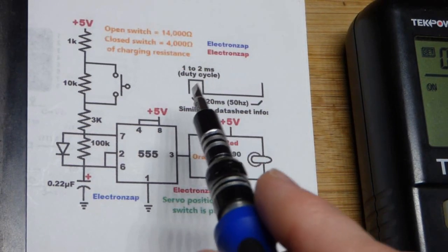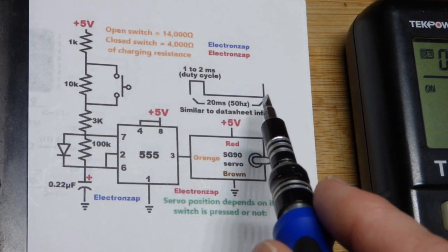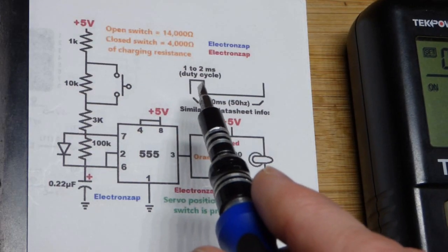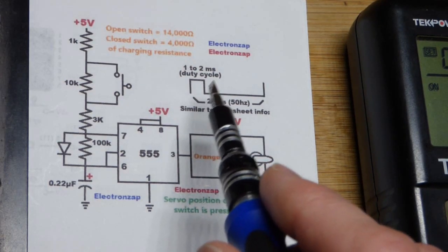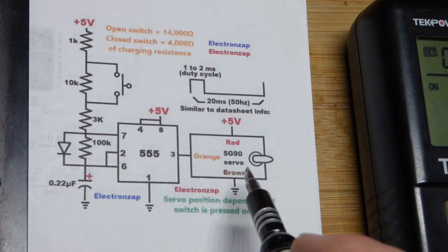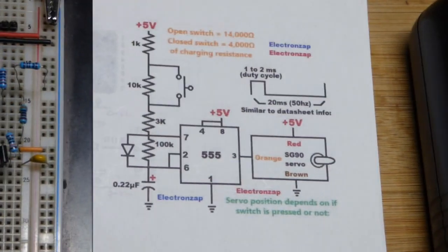There's about 20 milliseconds where it's low, approximately. Then you have pulses that are about 1 to 2 milliseconds that determine the position. The length of the pulse is what determines the position.